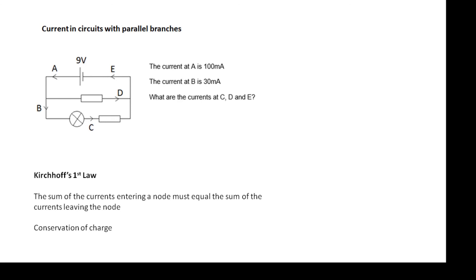And Kirchhoff's law tells us that the current entering any point must equal the sum of the currents leaving that point from conservation of charge. So the current at B is going to be 100 minus 30, and the current at C will be the same as the current at B.